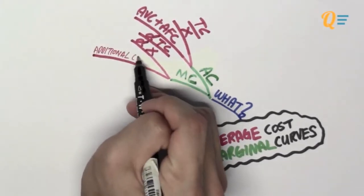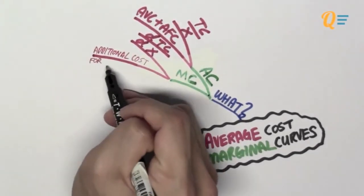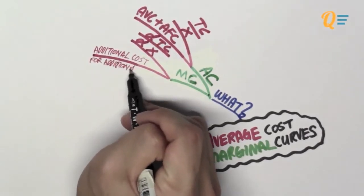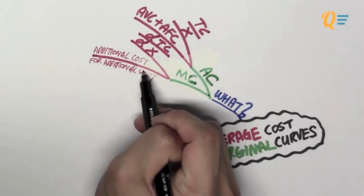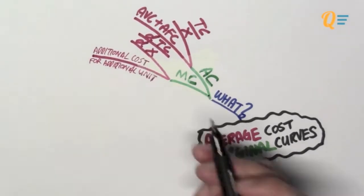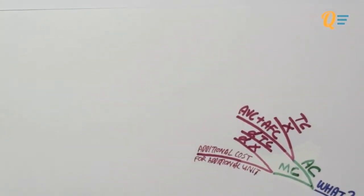So in English, this means that the marginal cost is the additional cost that is incurred by the company for producing an additional unit of x. So that's what it means in English. That is simply my way of translating the math into something that's more understandable. So let's use an example to understand what is average cost and marginal cost.